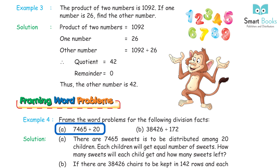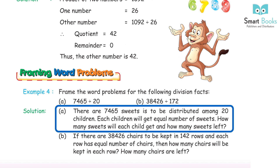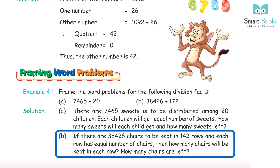Framing Word Problems, Example 4: frame word problems for the following division facts — a) 7465÷20 and b) 38426÷172. Solution: a) There are 7465 sweets to be distributed among 20 children, each child getting an equal number. How many sweets will each child get and how many are left? b) If there are 38426 chairs to be kept in 142 rows with each row having an equal number, how many chairs will be in each row and how many are left?